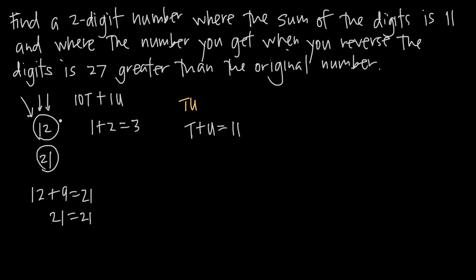10t plus 1 times u is always going to be our original number, but this is saying that when we reverse the digits and we say 10u plus 1t, that this is going to be 27 greater than our original number.